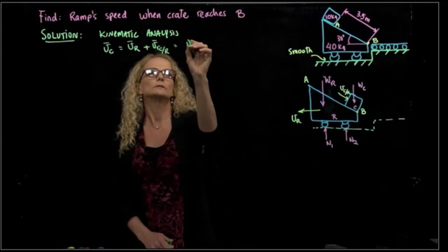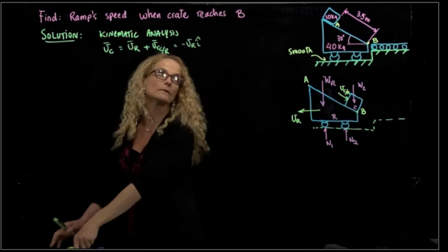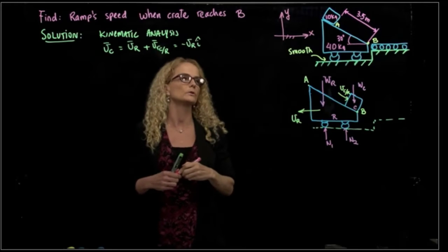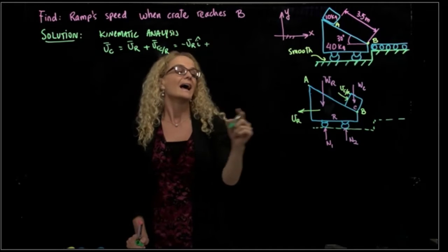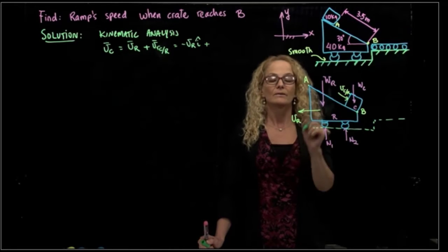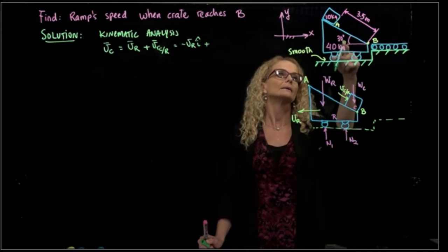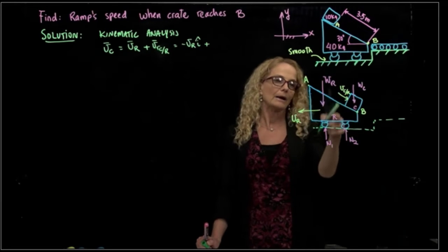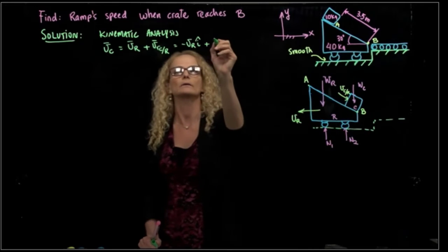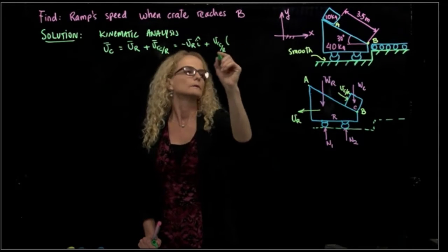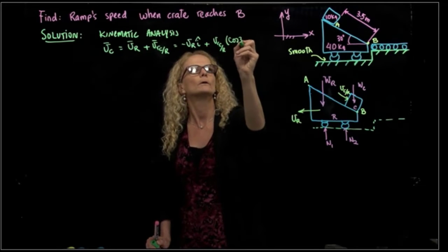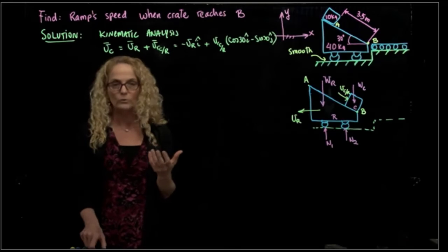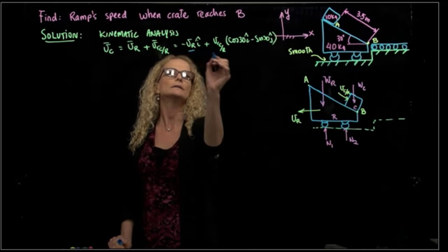The velocity of the ramp is in the negative i direction. The coordinate system I will use is x and y — it's very important that we always set up which coordinate system we want to use, and that direction will be positive. The relative velocity from the crate to the ramp has an inclination of 30°, so the x-component is cosine of 30 and the y-component is sine of 30. Written out: cosine of 30 for i, minus sine of 30 for j. I have two unknowns.